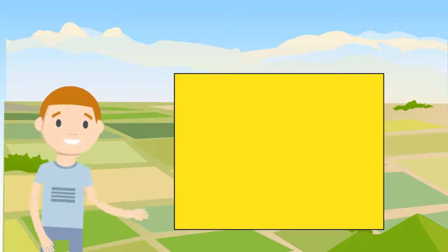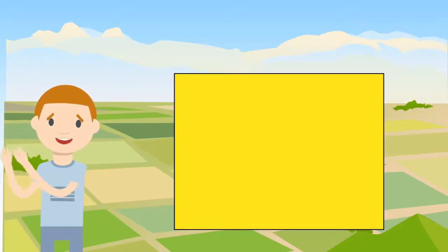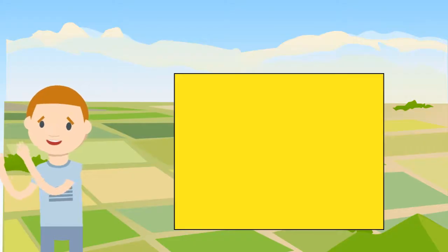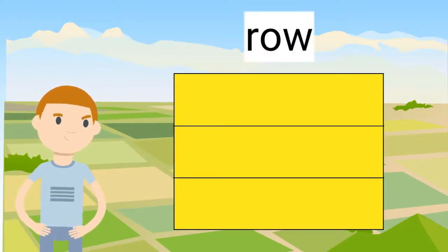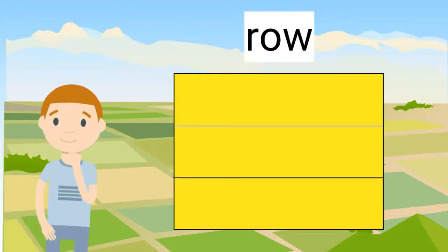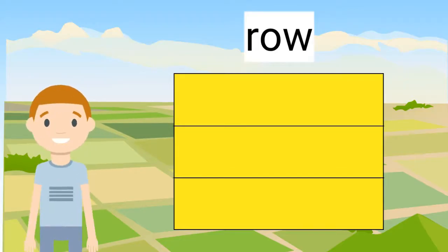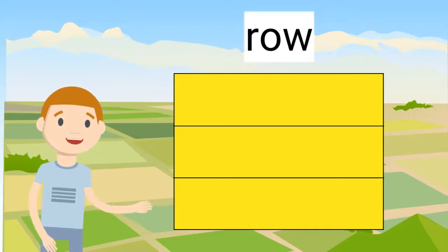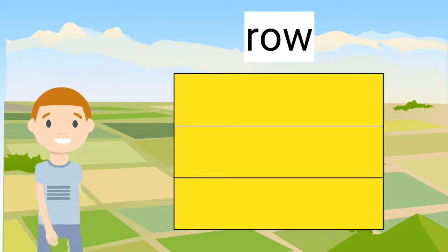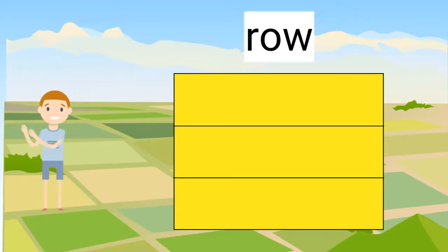This is another rectangle. We are going to divide this rectangle into equal sized squares. The first thing we do is make equal rows. Can you say the word row? Rows go from left to right across the rectangle. Each row has to be the same size.